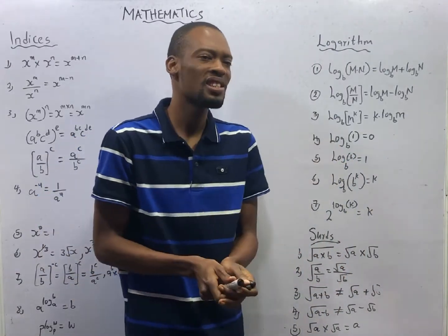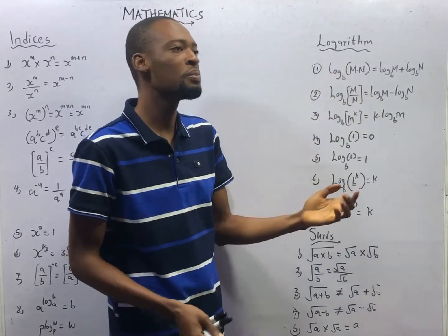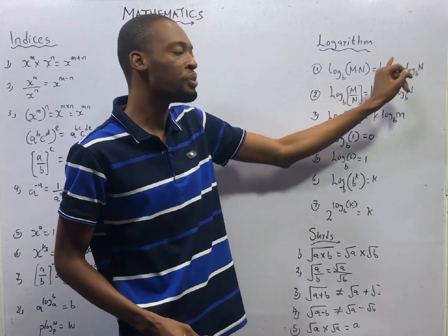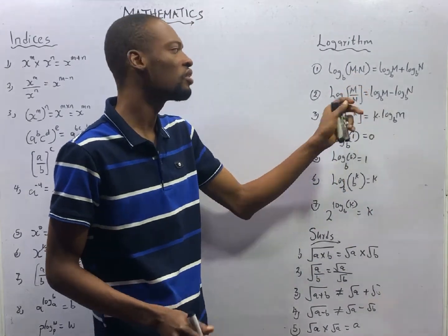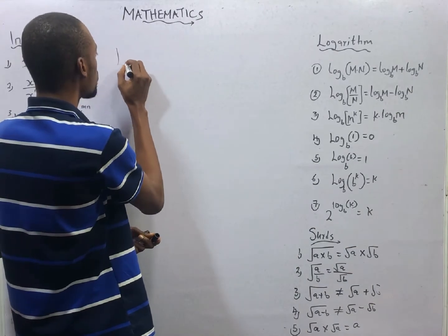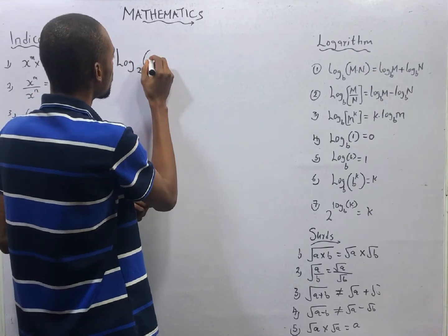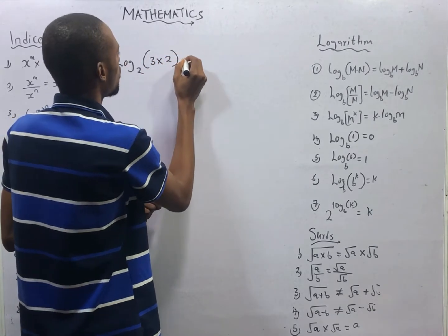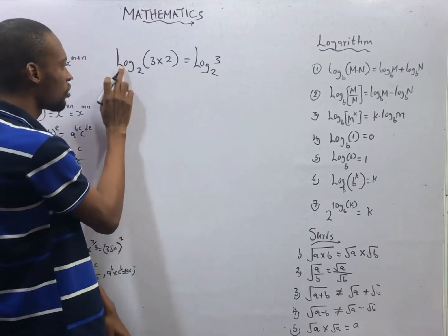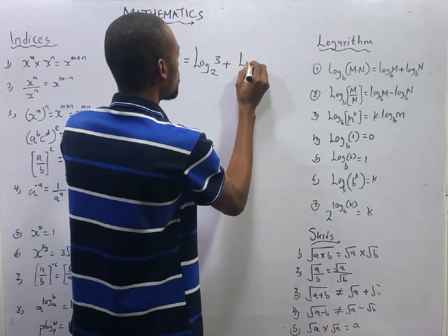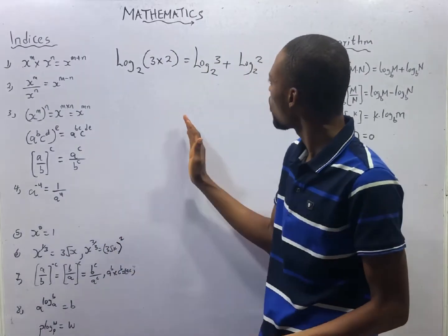The first law of logarithms says that if you have log of mn to base b, this is the same thing as log of m with base b plus log of n to base b. This law is referred to as the multiplication law. For example, log of 3 times 2 to base 2 is the same thing as log 3 base 2 plus log 2 base 2. That is what the first law is trying to tell us.